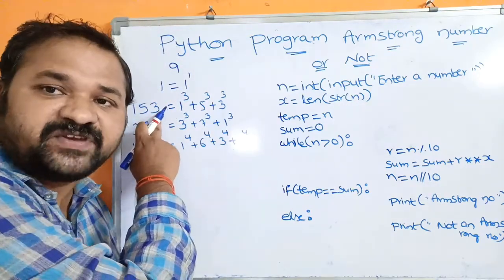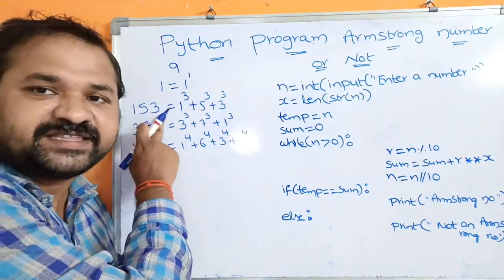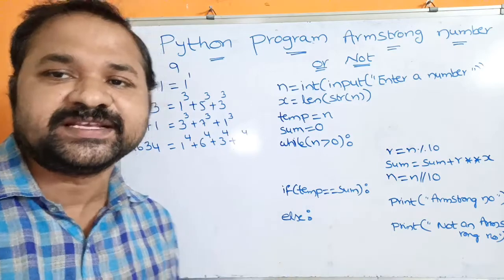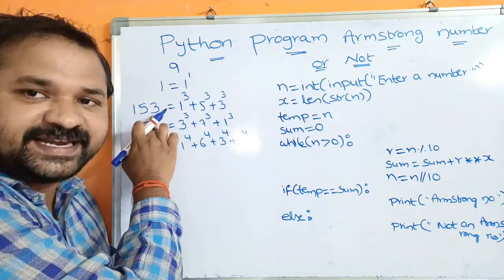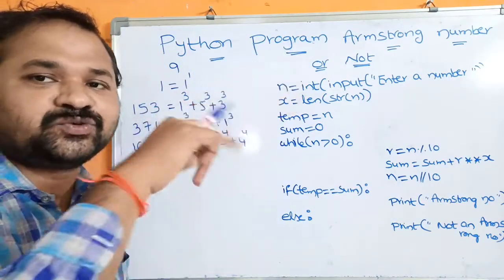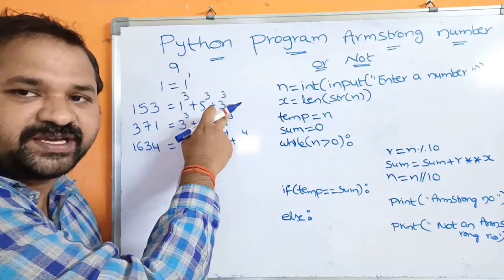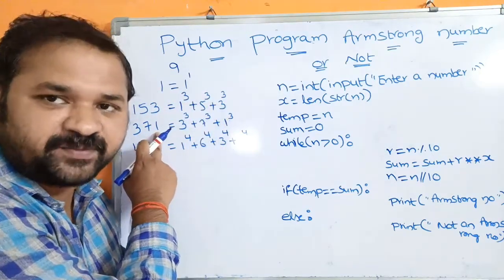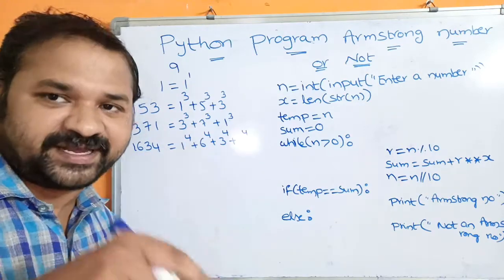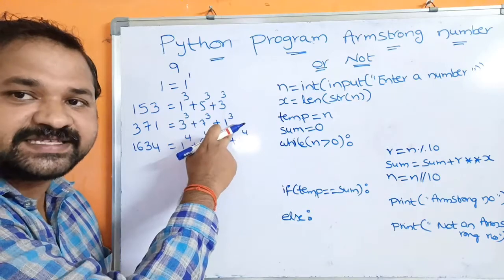If you take 153, it is an Armstrong number because 153 has 3 digits. So we cube each digit: 1 cube plus 5 cube plus 3 cube equals 153 only. Similarly, 371 is an Armstrong number because it contains 3 digits, so 3 cube plus 7 cube plus 1 cube equals 371 only.